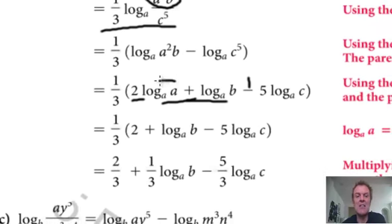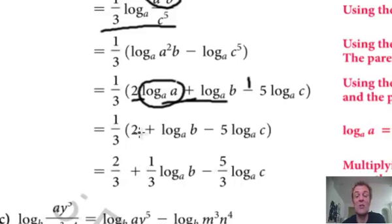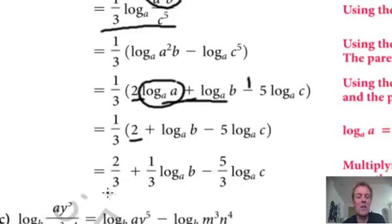Remember that third is still there, I brought it to the front earlier. Can you see this rule here? Remember, log to base A of A is one. So that two just is a two — it's not two times log A to base A, because log to base A of A is one. So we've simplified it to that. Then they've used the distributive law and come up with that.